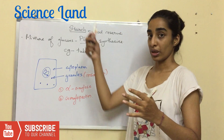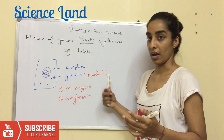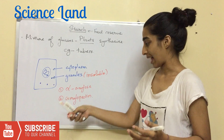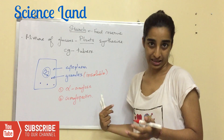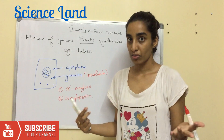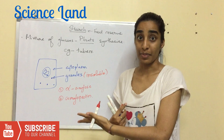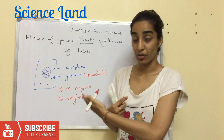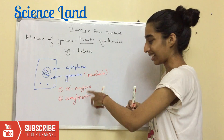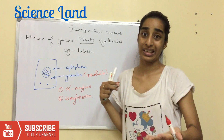Starch is basically made up of alpha amylose and amylopectin. Both have different structures, and that is what biochemistry is related to — so we'll study these two components in detail.